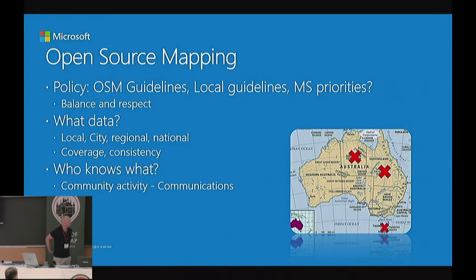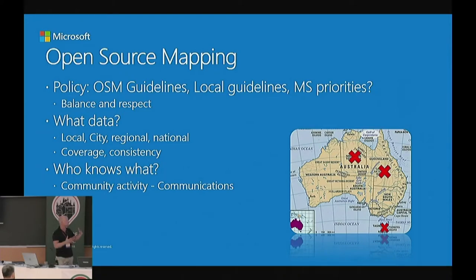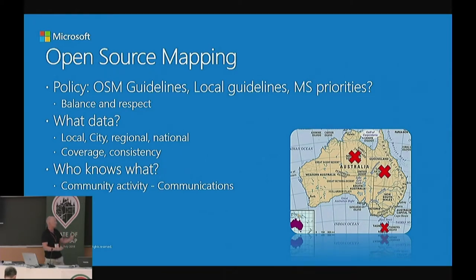In terms of open source mapping, one of the things we looked at from the outset was that we were going to have to be very much in line with the community, as well as look at several different things from a research perspective before we even started making any edits. So we looked at what the OSM guidelines were in terms of tagging and mapping policies, but also what was important from the Australian perspective. We were trying to strike a balance in how they implement the OSM guidelines in Australia, while being respectful of their existing roadmap edits.